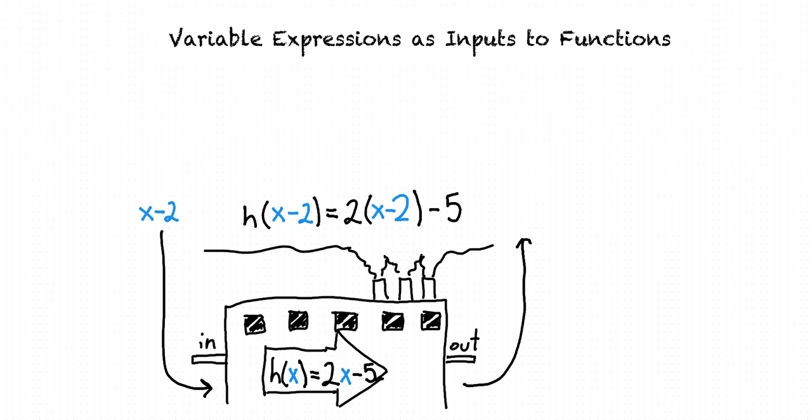In this case, to simplify it, we distribute this 2 to both of the terms inside the parentheses, giving us the expression 2x minus 4 minus 5. And then we can combine like terms, which in this case means combining the minus 4 and the minus 5, to give us a final answer of 2x minus 9.